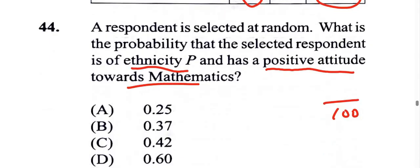So that's going to be 25 out of the hundred. So these 25 persons, they are positive towards math and they're from ethnic group P. And so that's the probability we're looking for, 25 out of a hundred.